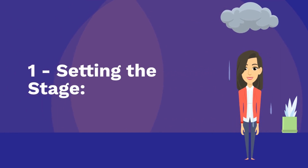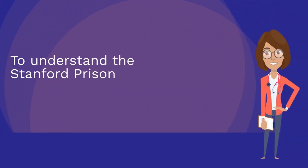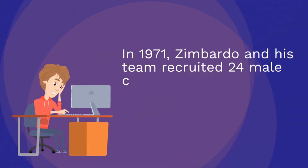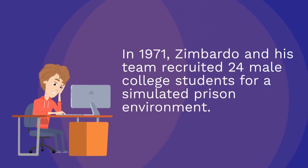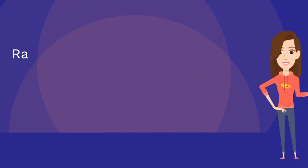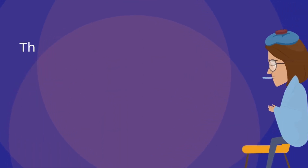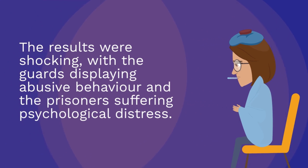Setting the stage. To understand the Stanford Prison Experiment, let's start by setting the stage. In 1971, Zimbardo and his team recruited 24 male college students for a simulated prison environment. Randomly assigned roles as either guards or prisoners, the participants were observed for two weeks. The results were shocking, with the guards displaying abusive behaviour and prisoners suffering psychological distress.